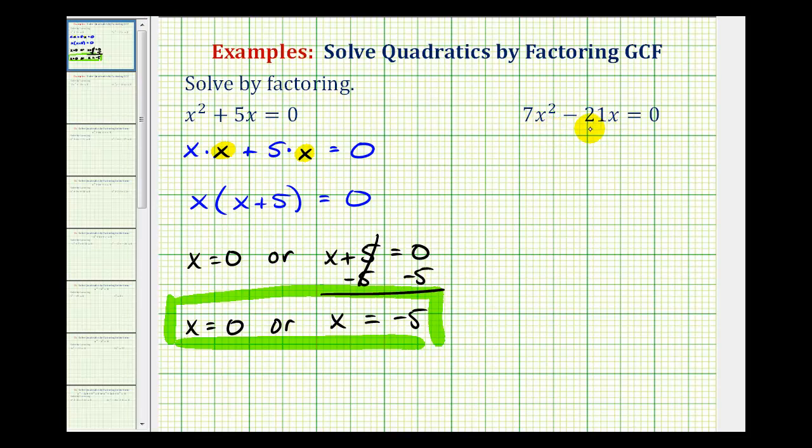And if we have a hard time seeing this, again, we could write 7x squared as 7 times x times x minus, and we could write 21x as 3 times 7 times x. And in this form, it's easy to see that both of these terms have a common factor of 7 as well as x.